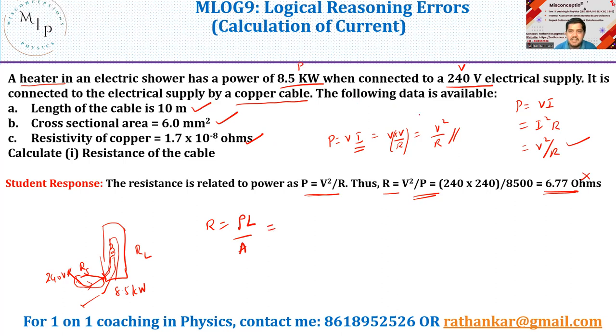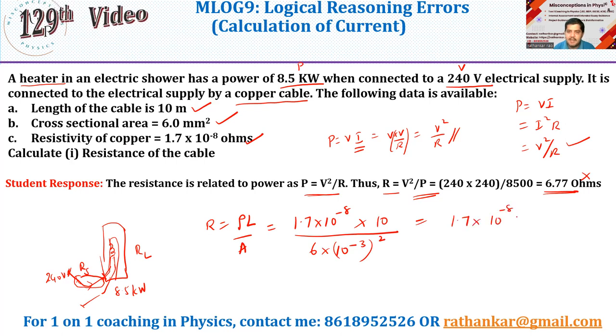So this value will now be equal to, what's the value of ρ, 1.7 × 10⁻⁸ multiplied by length 10 meters divided by area. What is the area? 6 millimeter squared. 6 × 10⁻³ the whole square. So which should now be equal to 1.7 × 10⁻⁸ × 10 divided by 6 × 10⁻⁶.